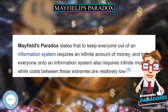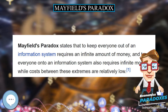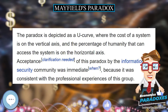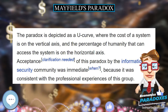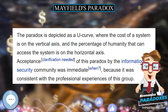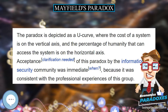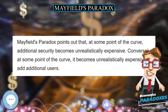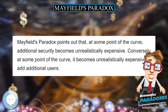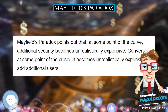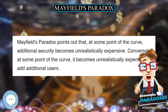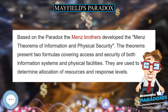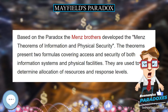Mayfield's Paradox states that to keep everyone out of an information system requires an infinite amount of money, and to get everyone onto an information system also requires infinite money, while costs between these extremes are relatively low.